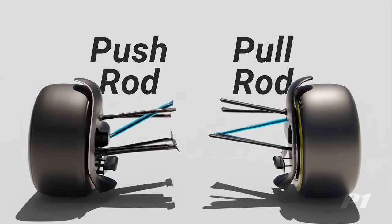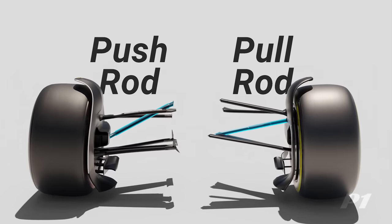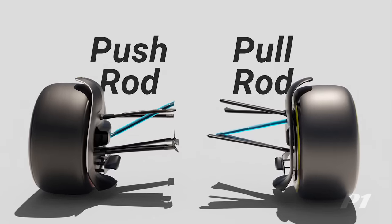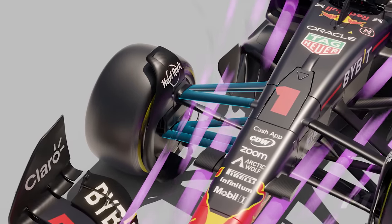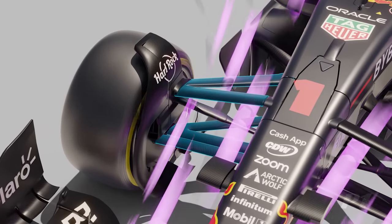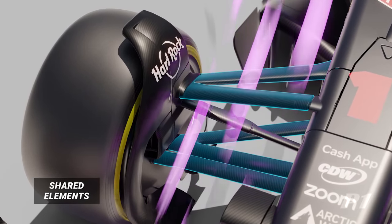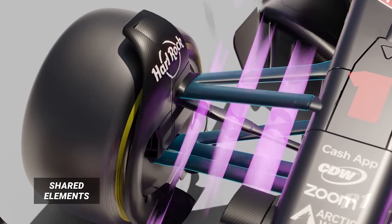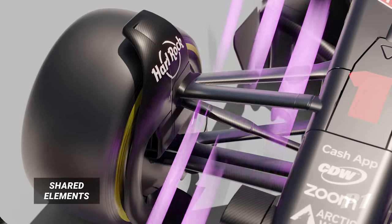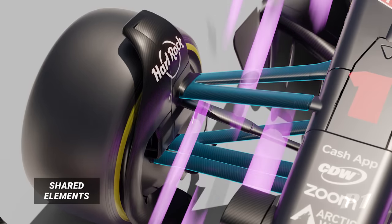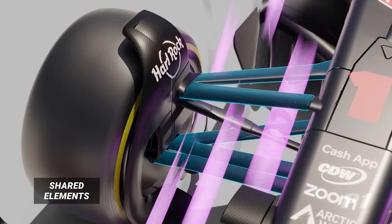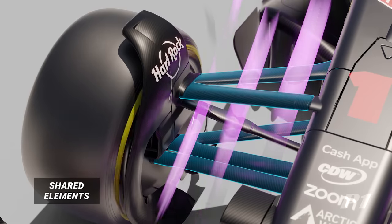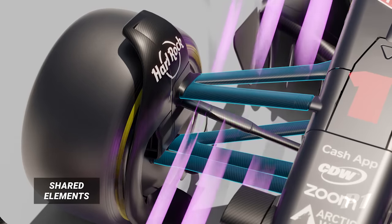In this animation, we're going to explore the differences between the two and why a team might pick one over the other. Let's first have a look at the elements of a suspension system that are out in the airflow. Both pushrod and pullrod systems share the following components.